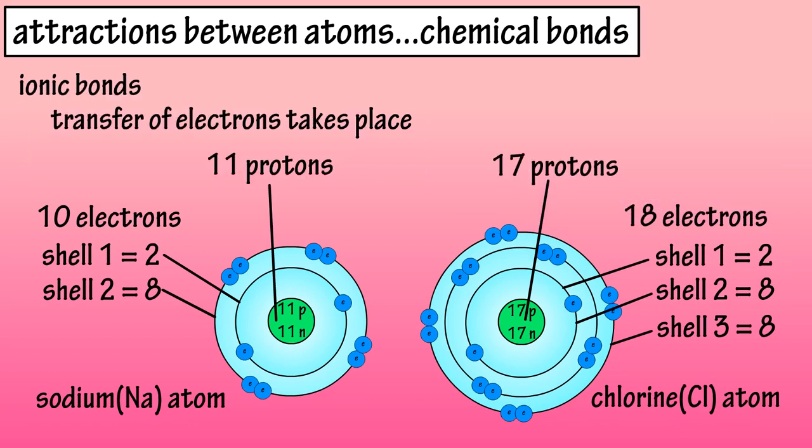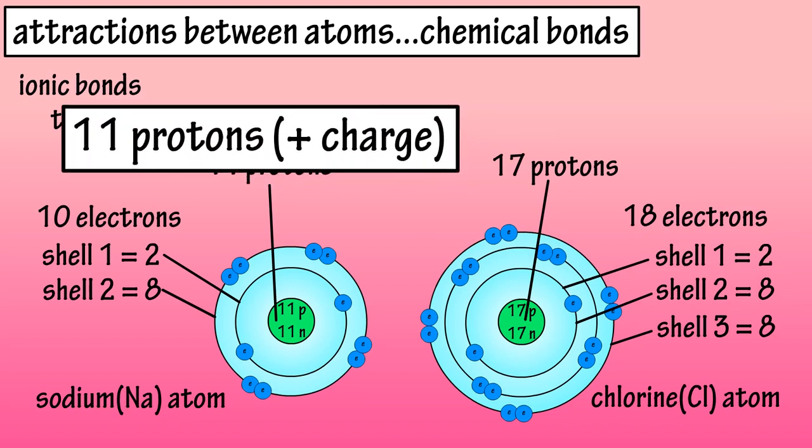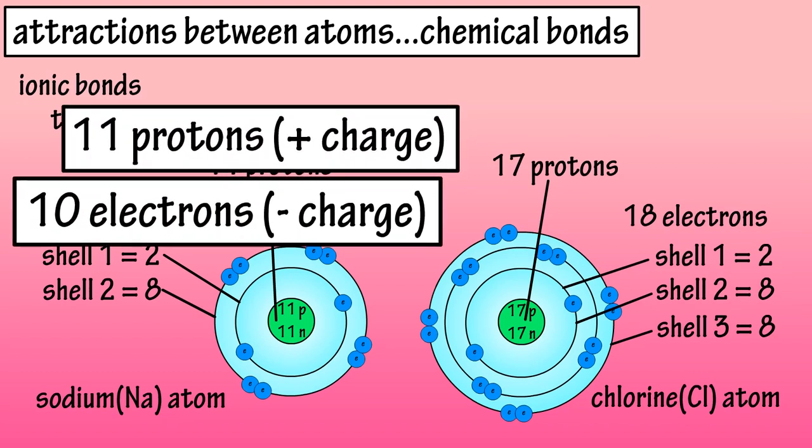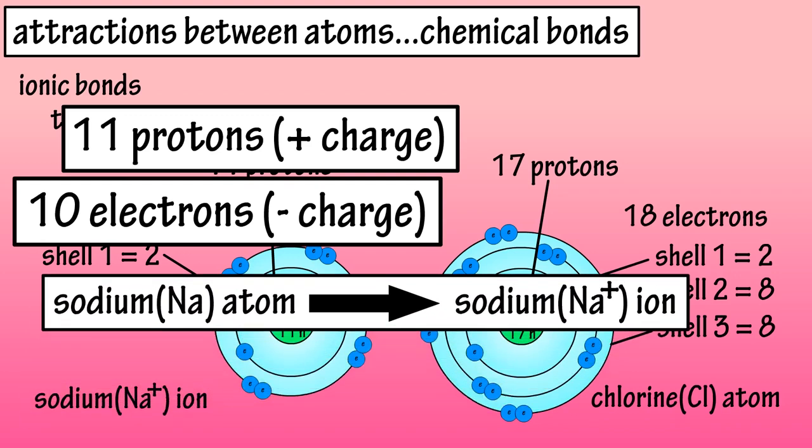Since the sodium atom gave up an electron, it has 11 protons, which are positively charged, and 10 electrons, which are negatively charged. This results in the formation of a sodium ion with a positive charge. An ion is an atom or molecule with a net electrical charge due to the loss or gain of an electron.